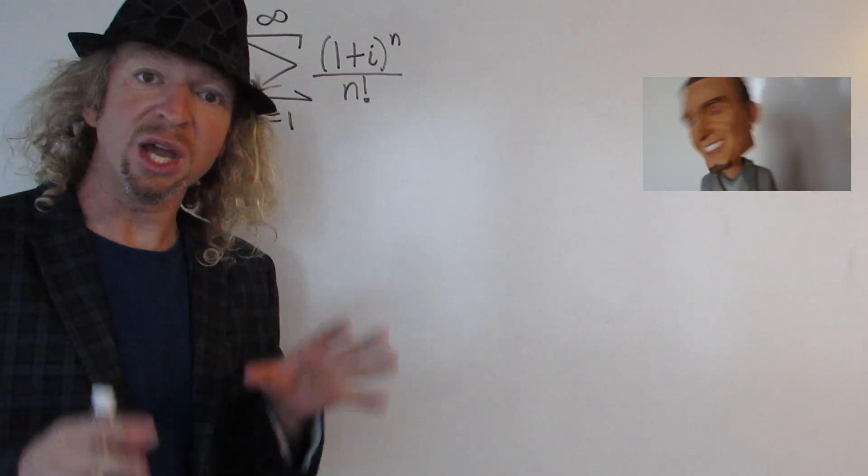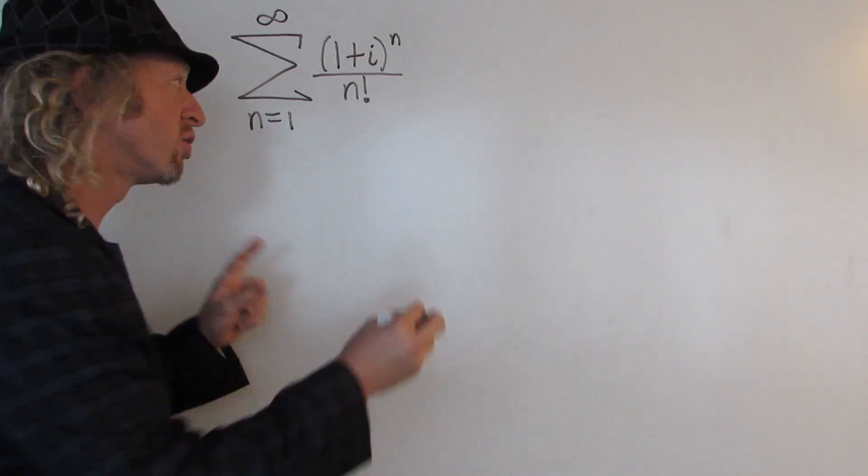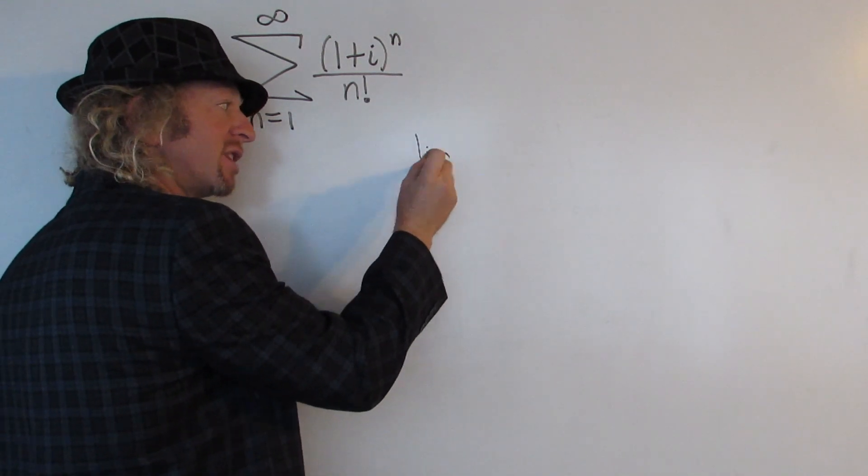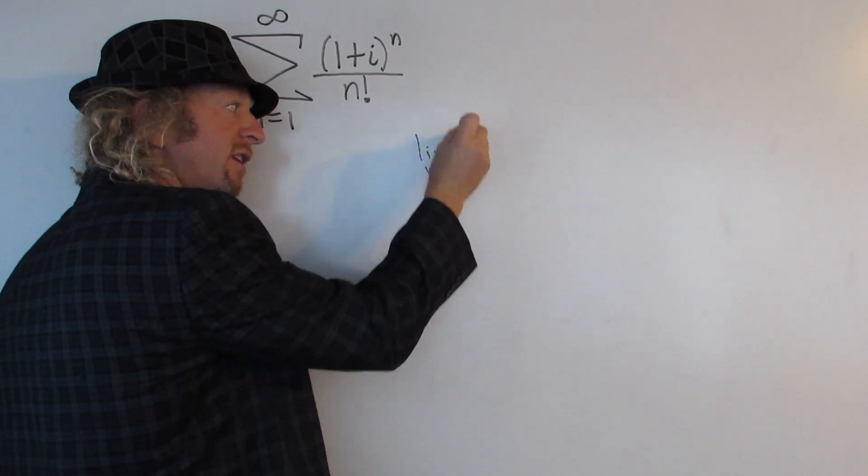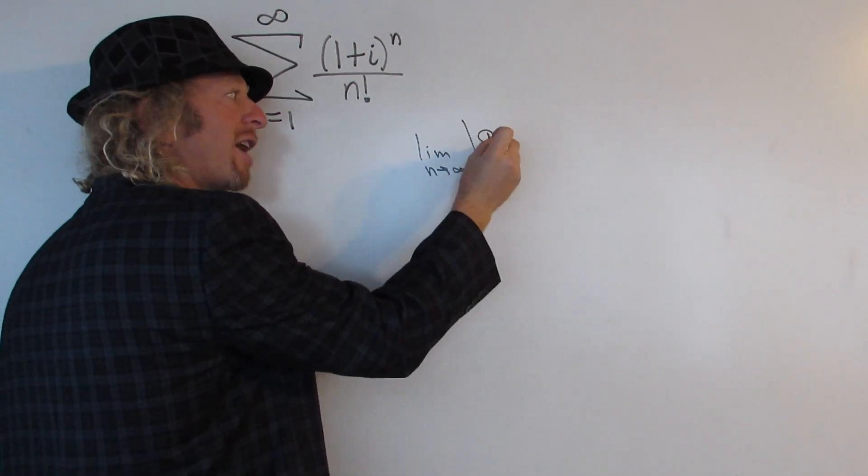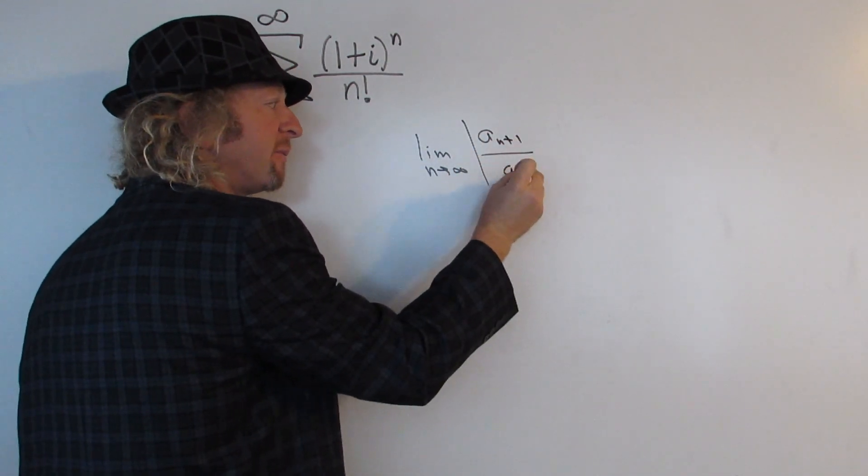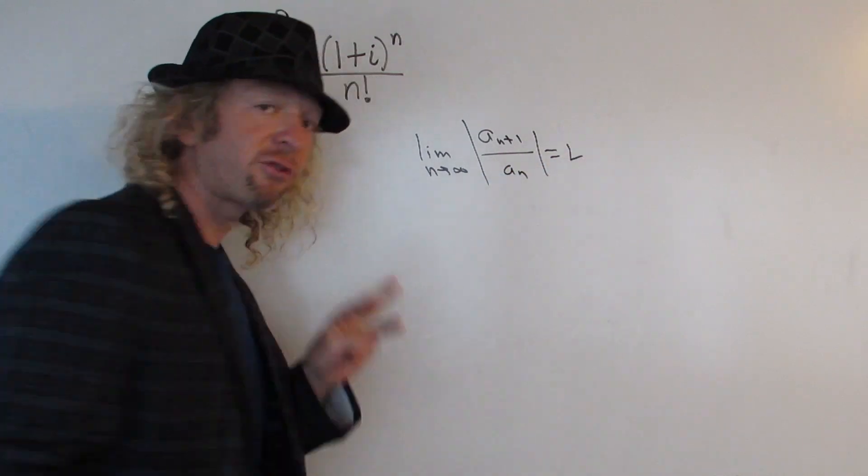We're going to use what's called the ratio test. So recall the ratio test where it says if you take the limit as n goes to infinity of the absolute value of a sub n plus 1 over a sub n, and you get l, one of three things can happen.